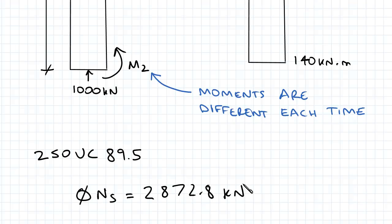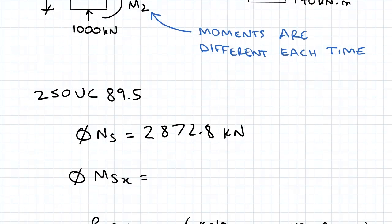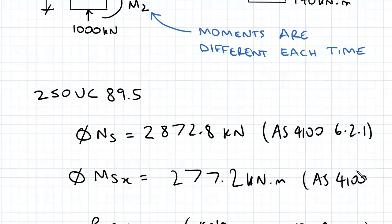And the Phi MSX from the previous - so this is all from AS4100, AS4100 6.2.1 - and this was 277.2 kilonewton meters. Again, units very important in this course to remember, and that's from AS4100 5.2.1.